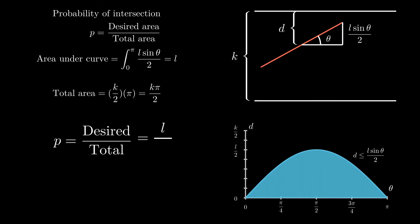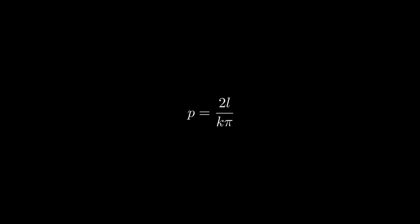Substituting the two in gives us the formula for the probability, and rearranging the equation shows that pi equals 2l over kp. In our example, we set the length of the needle equal to the distance between the lines, which cancels out l and k, and leaves us with pi equals 2 over p.